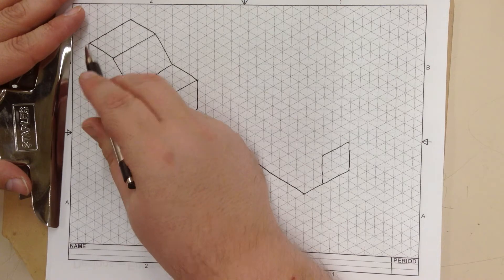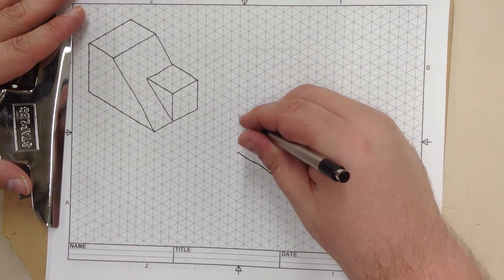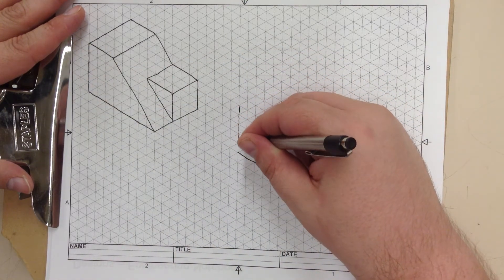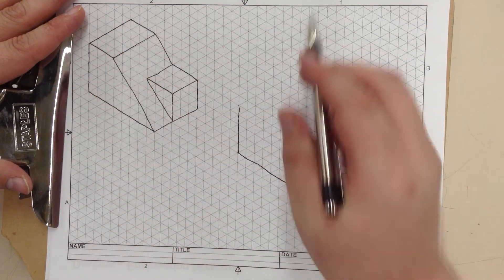And it goes 1, 2, 3, 4, 5 up. 1, 2, 3, 4, 5. 1, 2, 3, 4, 5 over.